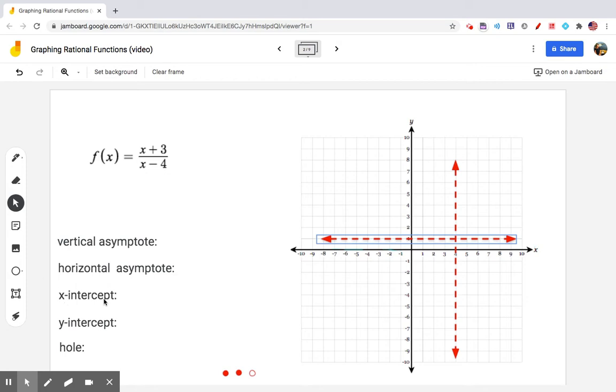Next, I want to think about an x-intercept. Remember, to find the x-intercept, we set y equal to 0. For a quotient to equal 0, the numerator must equal 0. So x plus 3 equals 0, which means x equals negative 3. That's my x-intercept. I put this dot at negative 3, and the graph is going to pass through negative 3 on the x-axis.